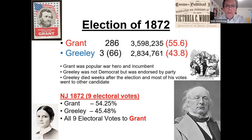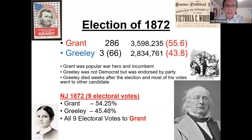The election of 1872 is fascinating because it has relevance to situations we've seen recently — a candidate having a physical problem. Grant was definitely going to beat Greeley, but in the last month, Greeley's wife died suddenly, putting him into a definite funk where he couldn't function. Within one month he died. The election had already been cast and he received 66 electoral votes, but he was dead. Only three electors retained his votes; the other 63 went to Grant. Grant was selected by New Jersey.